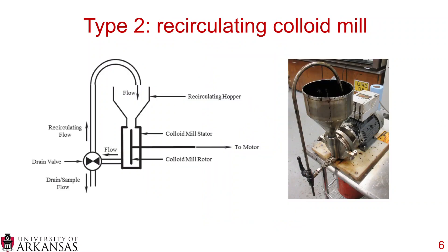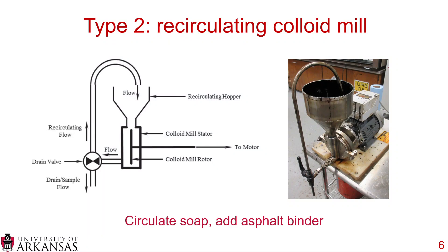The second type is a recirculating colloid mill. The material can go up through the recirculating pipe into the hopper, then into the rotor and stator. It can recirculate around, or the drain valve can be turned and you can take your sample out of the bottom. Basically you first start circulating your soap, then you add the asphalt binder, let it recirculate, and take your sample.